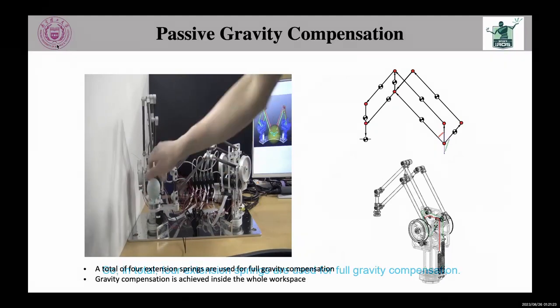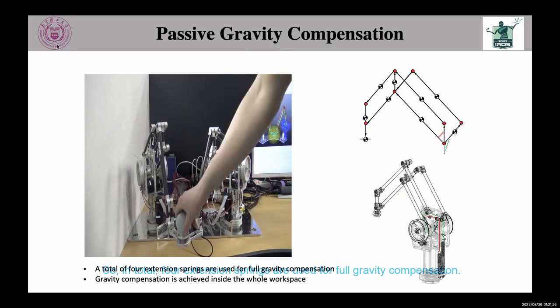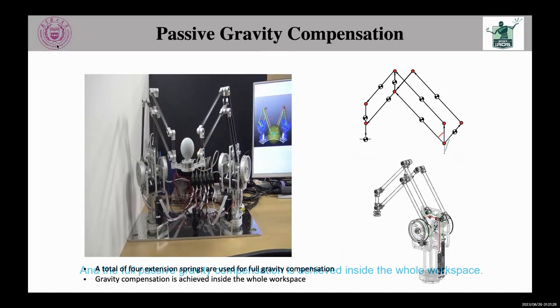So in total, four extension springs are used for full gravity compensation, and the gravity compensation is achieved inside the whole workspace.